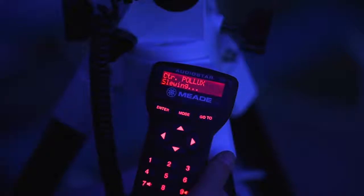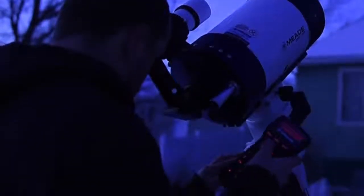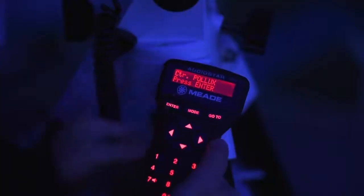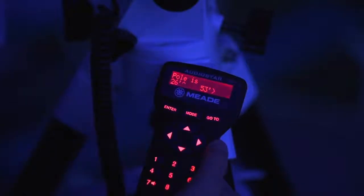When centering targets, it is best to use a slower, more precise slew speed. Now look through the eyepiece and use the arrow keys to more precisely center the star in the eyepiece's field of view. Then press enter. Repeat the procedure for the second alignment star.